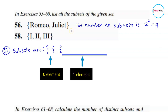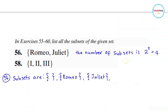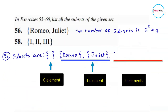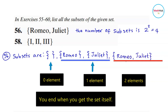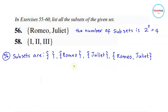You pick each element individually, so we have the set {Romeo} and the set {Juliet}. Then we write the set containing two elements: {Romeo, Juliet} — which is the set itself. We now have four subsets: the empty set, {Romeo}, {Juliet}, and {Romeo, Juliet}. Those are all the subsets.